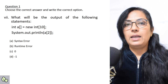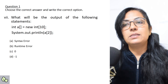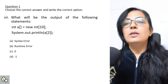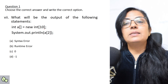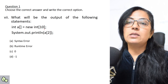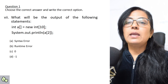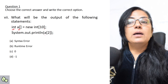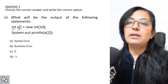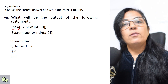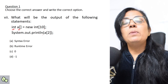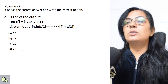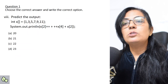Predict the output: int[] a = new int[10]; System.out.println(a[2]). The options are syntax error, runtime error, 0, or -1. When an array is declared with type int, the default values of that data type are assigned to all elements. So a[2] will be 0. The correct answer is 0.